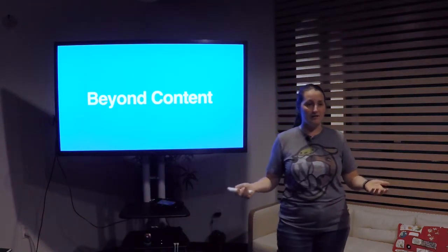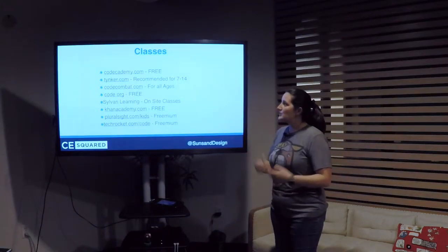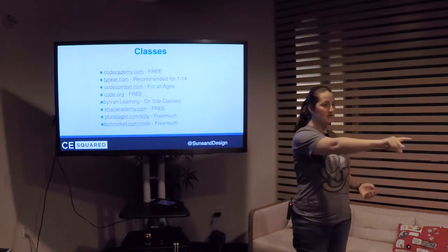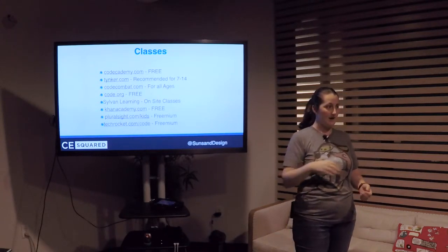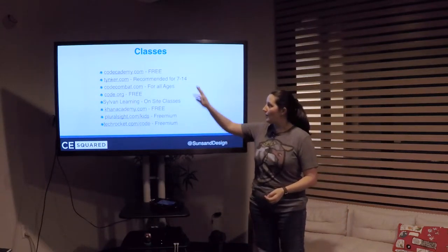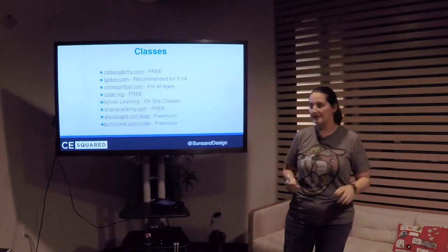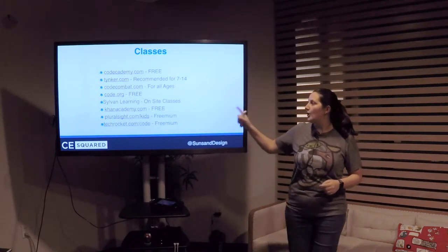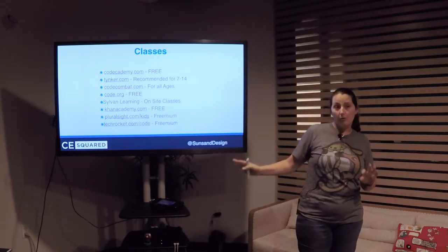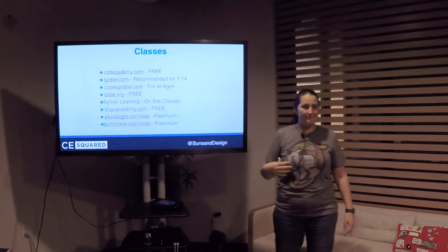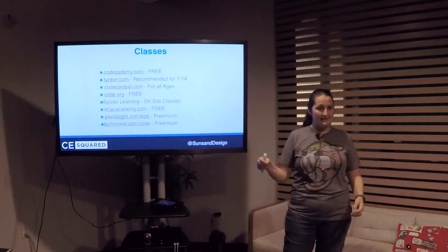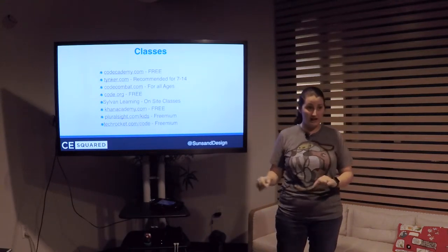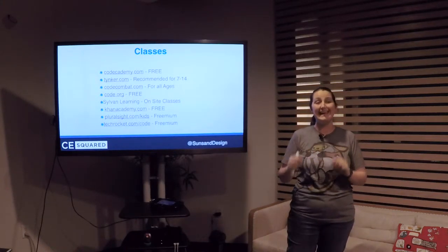Then we talk about moving beyond content. There are classes online to learn to code — there's a resource list on the handout here. Code Academy is free. Tinker is not free but gets into JavaScript programming, recommended for ages 7 to 14, and has a mobile app. Code Combat is not free but is for all ages. Code.org is free. Sylvan Learning offers on-site coding classes for kids at certain locations, revolving around building games.